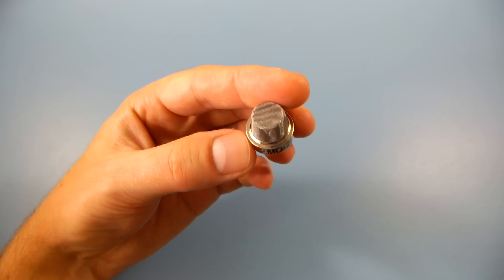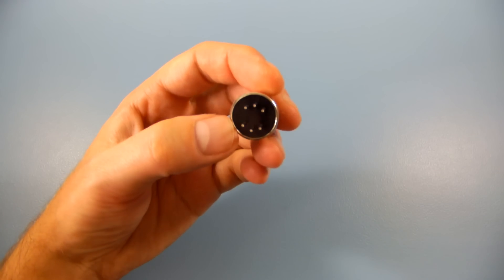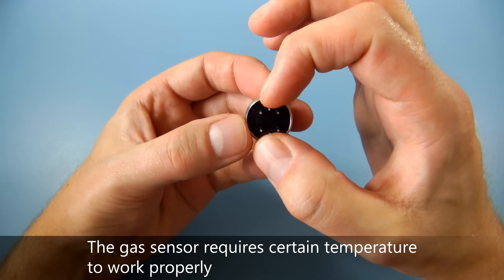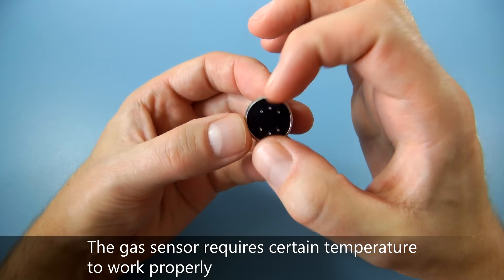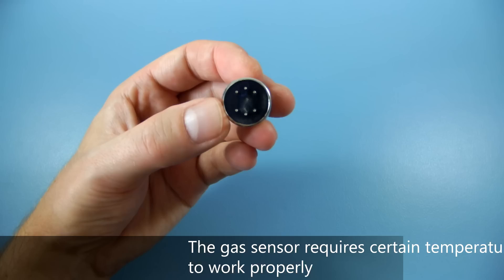Let's start playing with the sensor. A gas sensor has 6 pins. These two middle legs are heater coil pins. Don't worry about polarity, it's not important in this sensor.